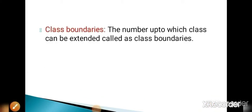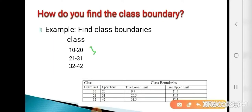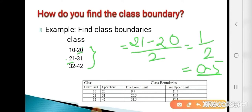Now the next definition is class boundaries. The number up to which a class can be extended is a class boundary. Given classes in inclusive form: 10 to 20, 21 to 31, 32 to 42. To calculate the class boundary, take the upper limit of any class and the lower limit of the next class: (lower limit of next class minus upper limit of previous class) divided by 2. That is (21 minus 20) divided by 2 = 0.5. So 0.5 is the class boundary, used to convert inclusive classes into exclusive ones.